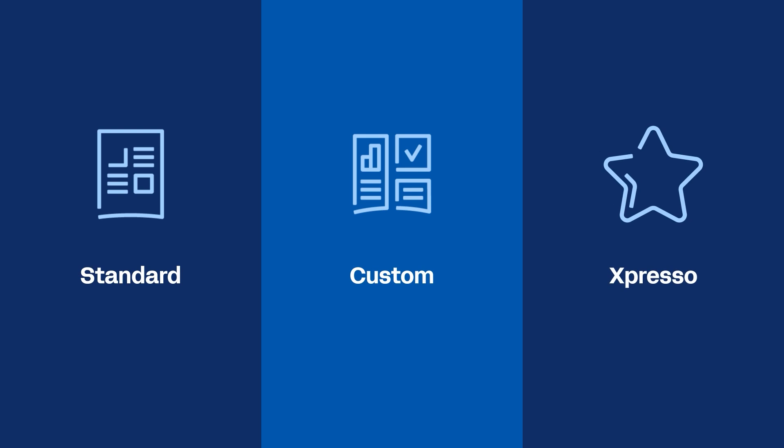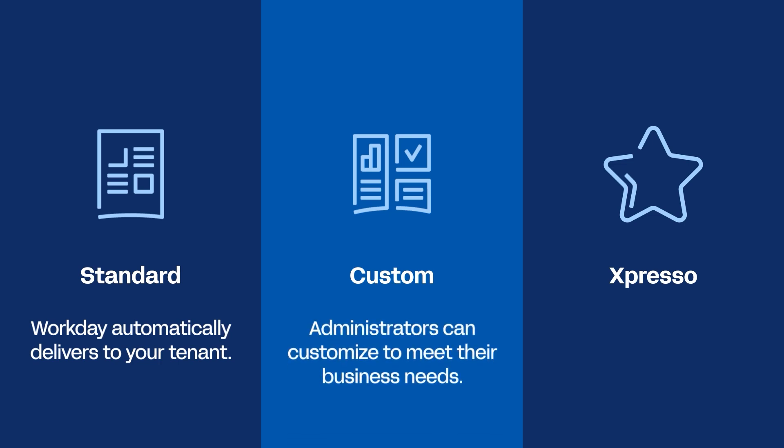Standard reports are reports that Workday automatically delivers to your tenant. Custom reports are reports that administrators can customize to meet their business needs. For example, a report administrator might copy a standard report and customize it, or they may create a custom report from scratch.